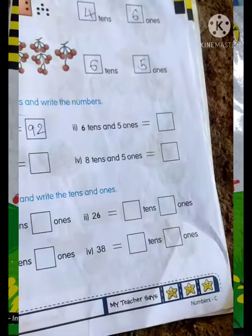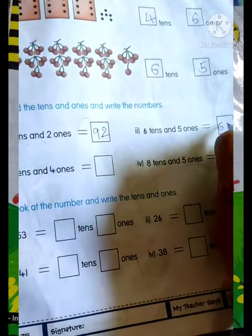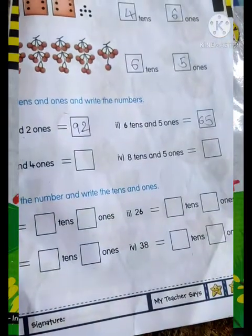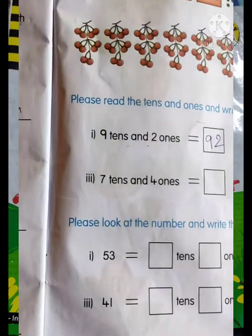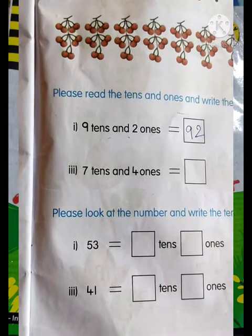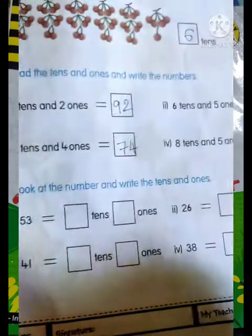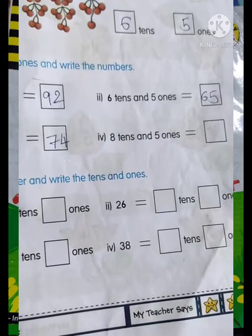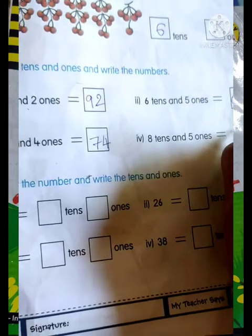Next is 6 tens and 5 ones, 65. Next is 7 tens and 4 ones, 74. Next is 8 tens and 5 ones, 85. Okay friends.